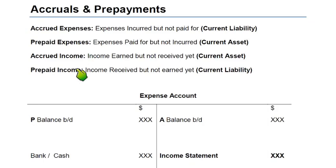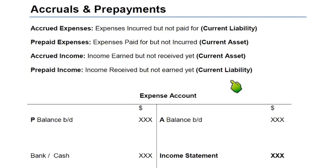Now prepaid income: if someone is living in your apartment and they have paid the whole year's rent in advance — say monthly rent is 50,000 multiplied by 12 months — they have paid you the entire year upfront and instructed you not to ask for rent for the next 12 months. They will be using your property for the whole year and do not need to pay again. This is prepaid income for you — income received but not yet earned. This is an asset for the tenant but for you, it is a current liability.